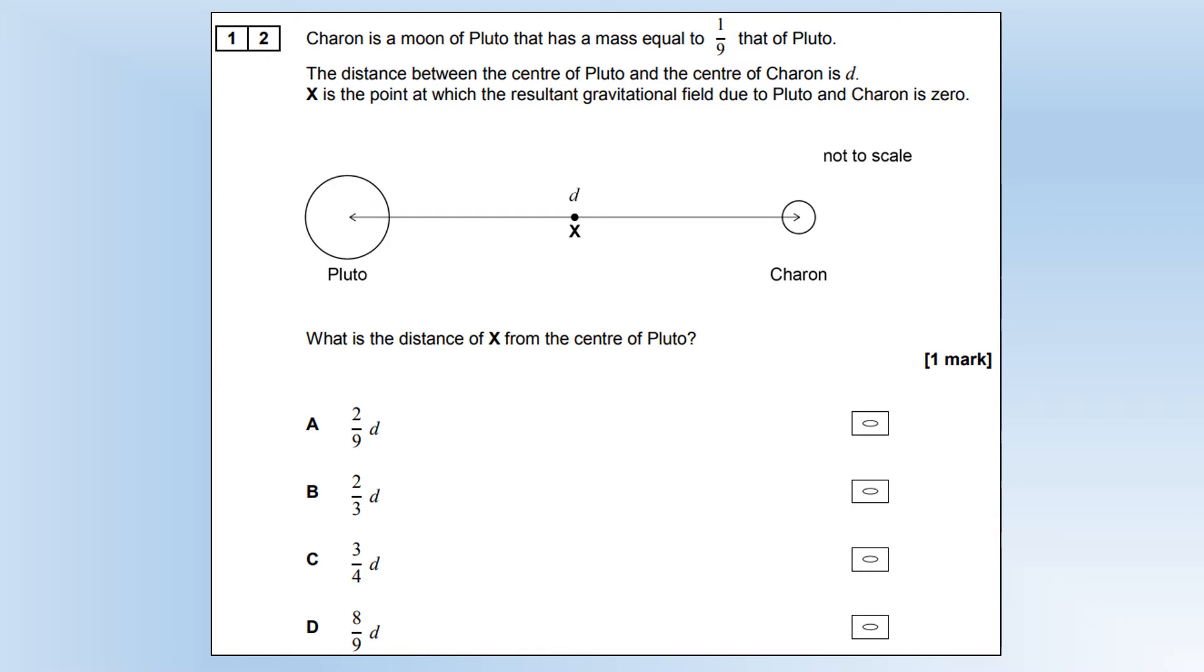Chiron is a moon of Pluto, and has the mass equal to one-ninth of that of Pluto. The distance between the center of Pluto and the center of Chiron is D. X is the point where the resultant gravitational field, due to Pluto and Chiron, is zero. What is the distance of X from the center of Pluto? We know their two field strengths are equal. X is the distance from Pluto, so D minus X is the distance from Chiron. The mass of Chiron is the mass of Pluto divided by 9. We can cancel the GMs from both sides, flip both sides over. At this stage, all the numbers are square numbers, so we can square root everything, rearrange, and solve for X, which is option C. With questions where we have field strengths equal to each other, they very often involve square numbers.